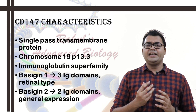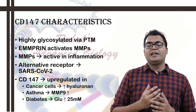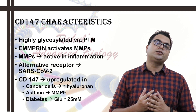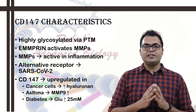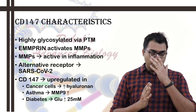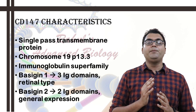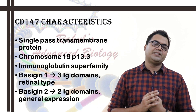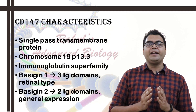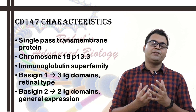CD147 is also known as Basigin or EMMPRIN — extracellular matrix metalloproteinase inducer. It belongs to the immunoglobulin superfamily and is of two specific types: Basigin-1 and Basigin-2. Basigin-1 is specifically of the retinal type and has three immunoglobulin domains, while Basigin-2 is of the general expression type and has two immunoglobulin domains. We will primarily be discussing Basigin-2.